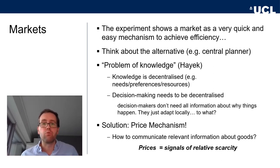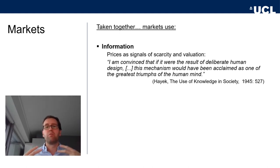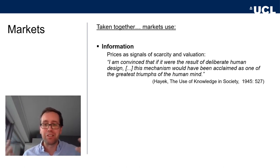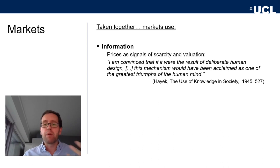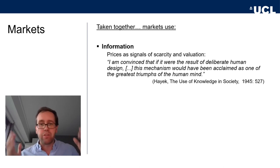Markets basically emerge spontaneously and use prices — the value of a good in whatever medium of exchange we use — as the only signal we need. It's a signal of scarcity and valuation. Hayek, writing against socialism in 1945 in 'The Use of Knowledge in Society,' writes: 'I am convinced that if it were the result of deliberate human design, this mechanism — the price mechanism, the market — would have been acclaimed as one of the greatest triumphs of the human mind.' You can disagree with the phrasing, but markets are an incredibly powerful tool.